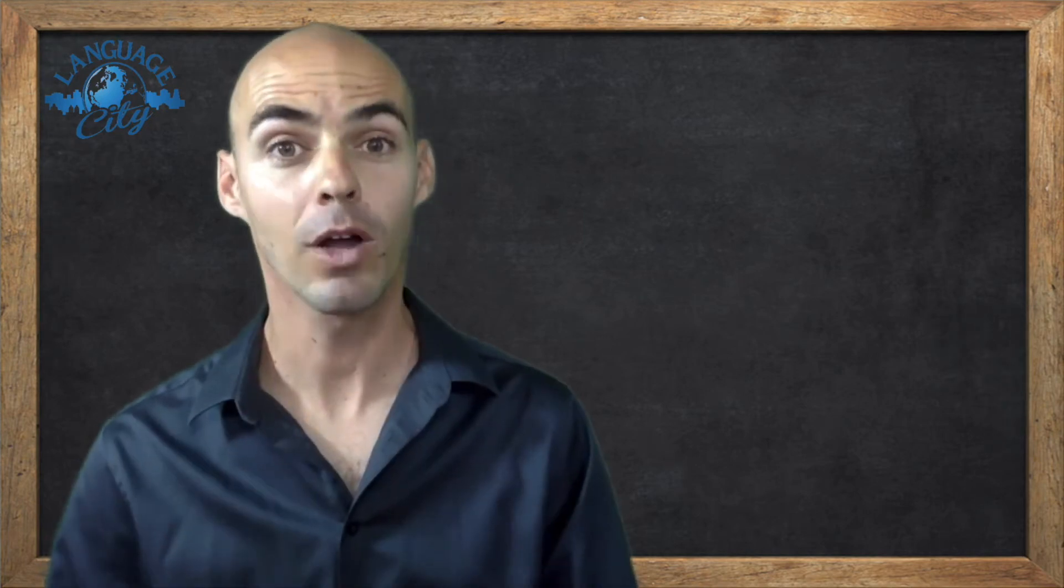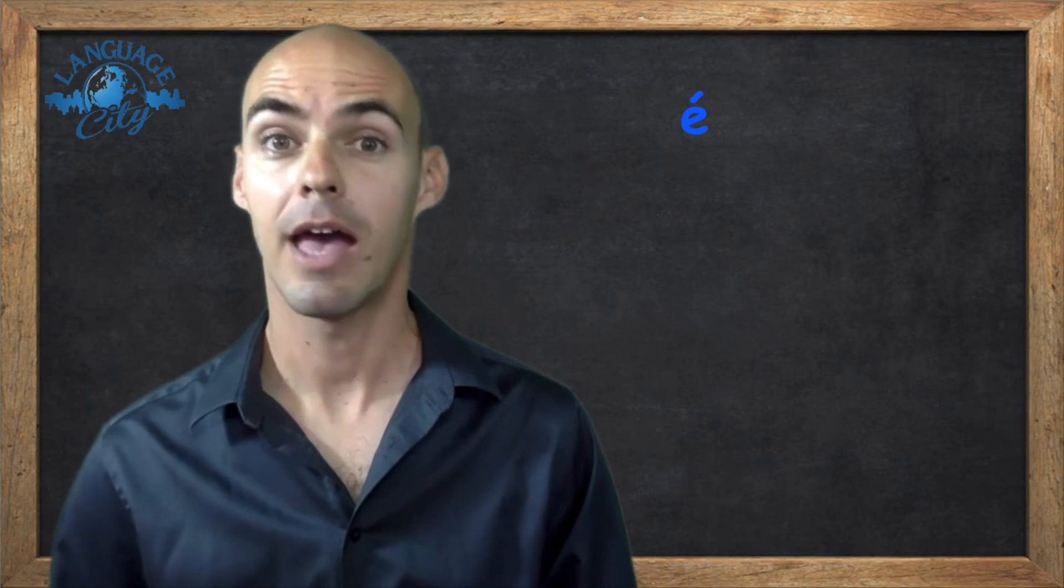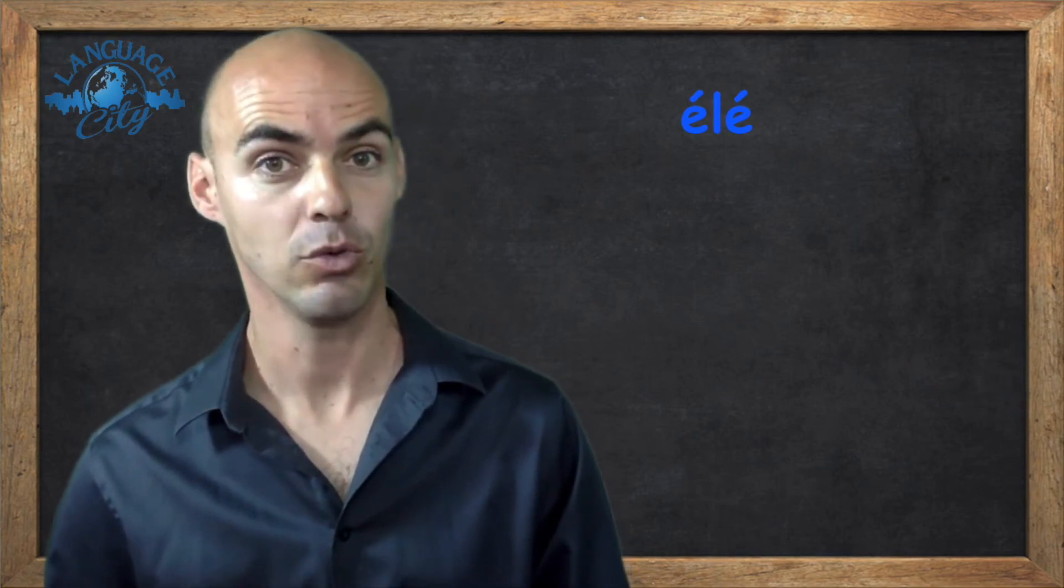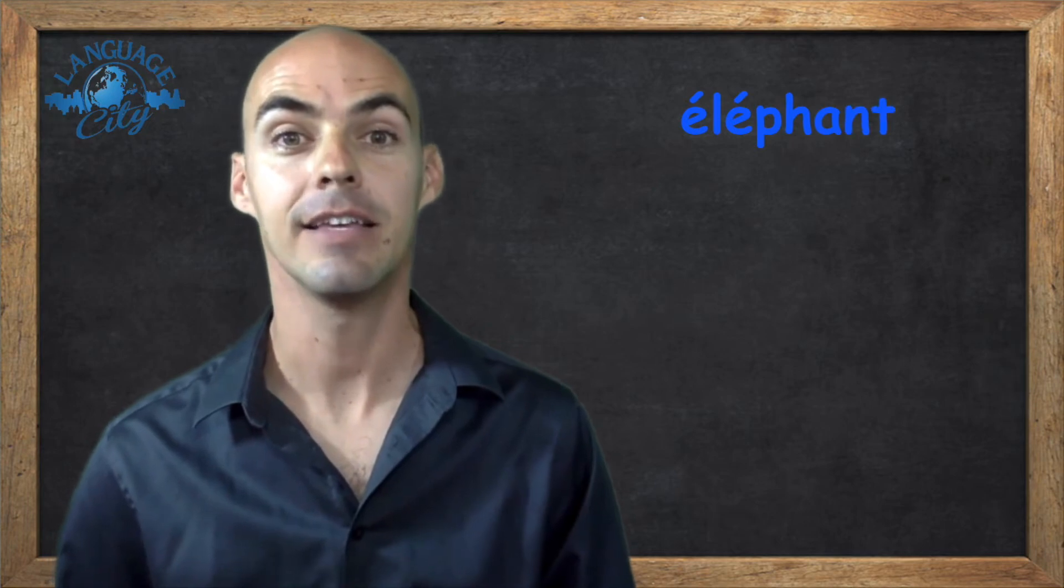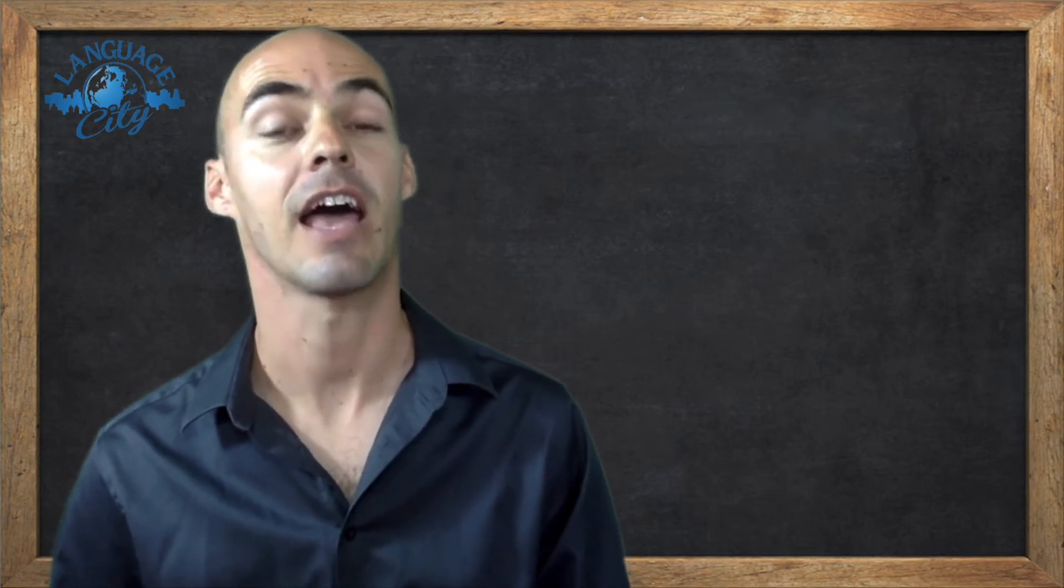Alright, let's go over the answers now. Number one was E accent aigu, L, E accent aigu, P, H, A, N, T. Un éléphant, an elephant.